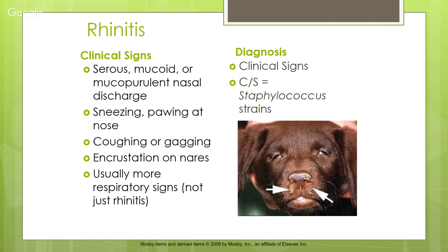Rhinitis is inflammation of the nose or nasal cavity. We'll see serous, mucoid, or mucopurulent nasal discharges — usually bilateral since the entire nose is involved. Animals may sneeze, paw at the nose, cough, or gag. You'll see incrustation on the nares. Rhinitis is usually secondary to something else, and on culture we often grow out Staphylococcus.